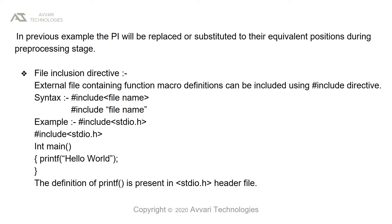The second type is the file inclusion directive. External files containing function or macro definitions can be included using the hash include directive. The syntax is: hash include between angle braces for the file name, or hash include between double quotes for the file name. For example, #include <stdio.h>. Inside a main function, printf("Hello World") — the definition of printf is present in the stdio.h header file.